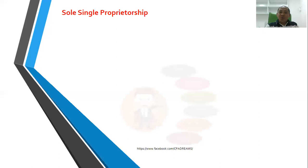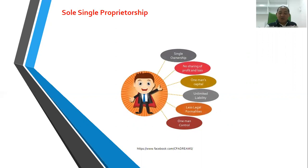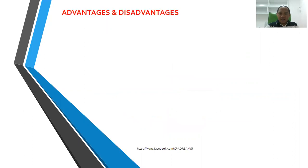For single proprietorship, the characteristics are: single ownership, and sharing of profits and losses — if there are profits, you alone receive them; if there are losses, you alone shoulder them. Capital comes from your own resources — your savings, other income, your own money, or from family or friends — but you are the main owner. This form involves less legal formalities.